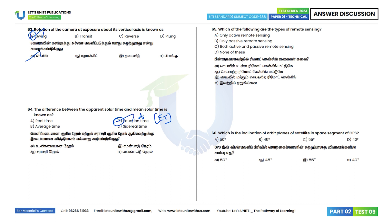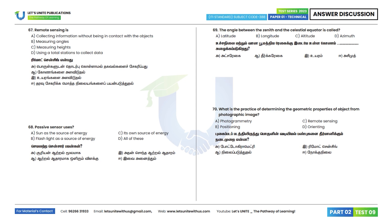Question 65: Which of the following are the types of remote sensing? The answer is both active and passive remote sensing. Option C is the correct answer. Question 66: Which is the inclination of orbit planes of satellites in the space segment of GPS? The inclination is 55 degrees. Option C.